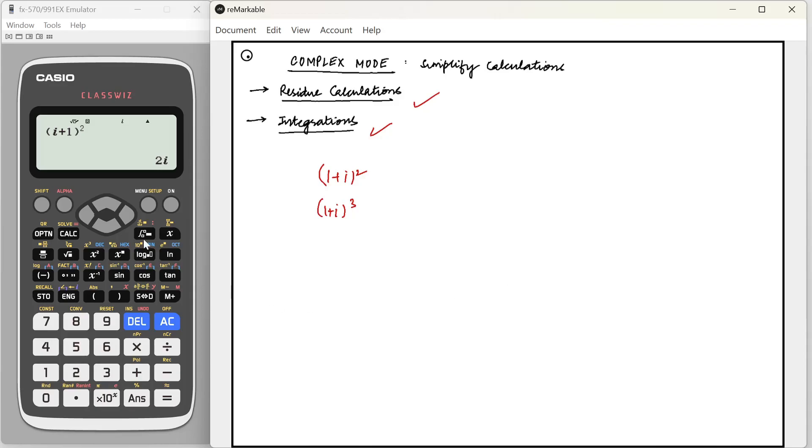So instead of that we can just write one plus i whole cube and that will give us minus two plus two i. You can multiply, divide anything in this mode.